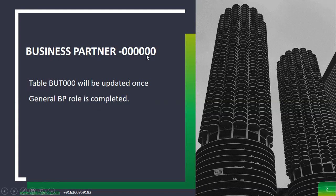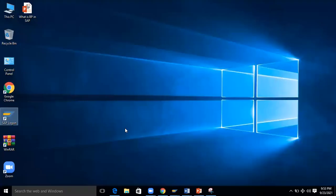I'm going to show you what exactly this business partner is, and you can see the six-digit zeros for the BP number. I'll show you how SAP has given BP roles and which table will be updated when you create the business partner. Then we'll discuss and I'll explain more about the next level of understanding. Now let's go to the SAP system.